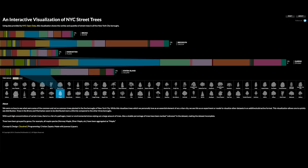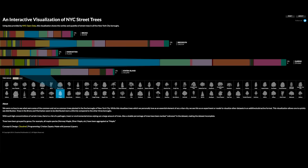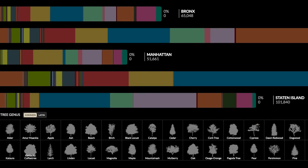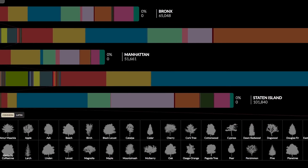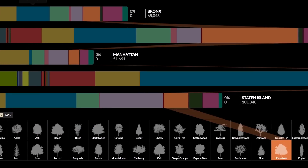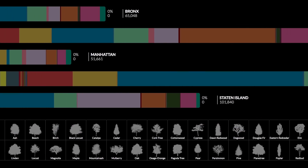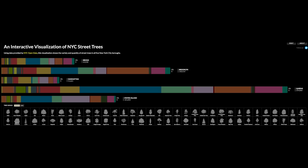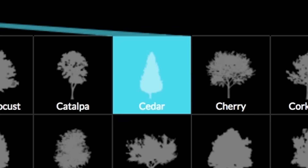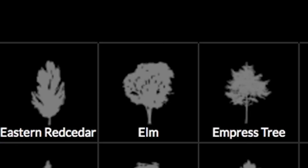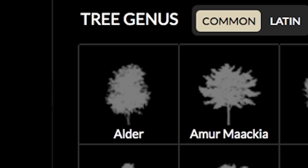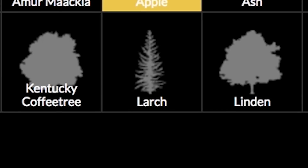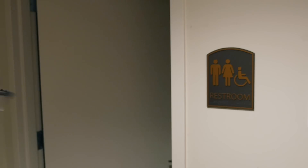Maybe it's better to stay where there's more gravity, like in New York City. This interactive visualization of NYC street trees uses open data to show the variety and quantity of street trees across all five boroughs. There are lots of species to choose from, so consider all of them and alternate between the small and large ones.